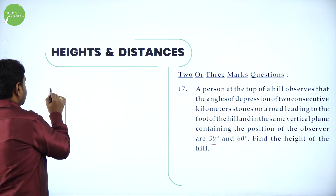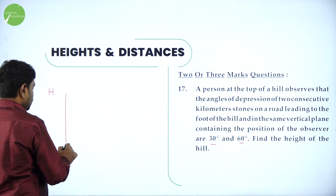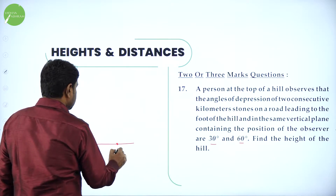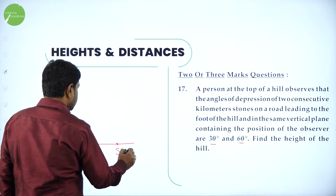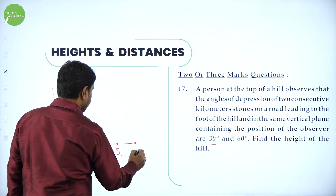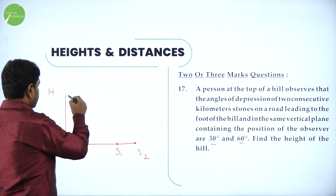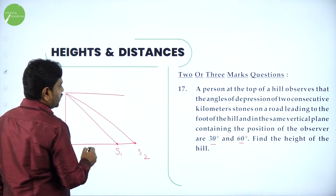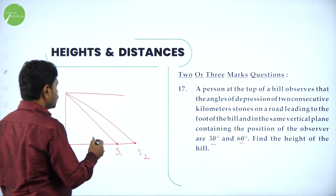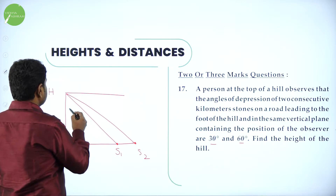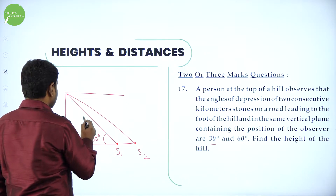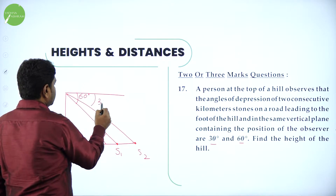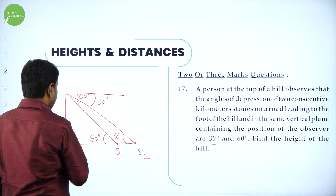Let us draw a diagram. HL is the hill and a person is standing on the top of the hill. He observes two kilometer stones S1 and S2. Angle of depression to see both of them: 60 degrees for the nearer stone and 30 degrees for the farther one. Let H be the height of the hill.